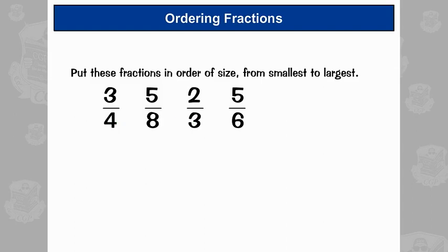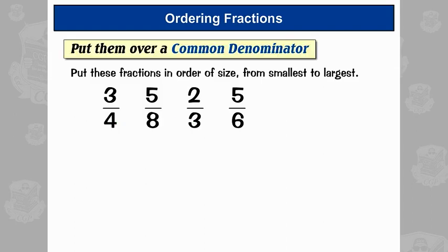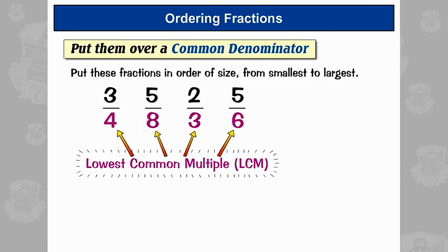What you need to do is put all the fractions over a common denominator — that's the same number on the bottom — and then they'll be easy to compare. The common denominator will be the lowest common multiple of all these numbers on the bottom.